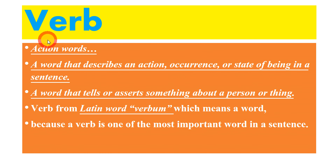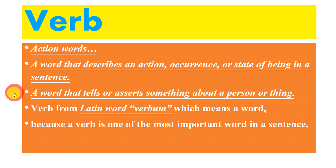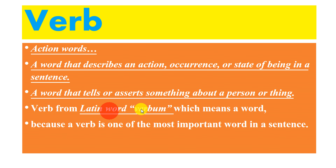So what is a verb? A verb is an action word. A verb is a word that describes an action, occurrence, or state of being in a sentence. A verb is a word that tells or asserts something about a person or thing. The word verb is from the Latin word verbum, which means a word. It is because a verb is one of the most important words in a sentence.